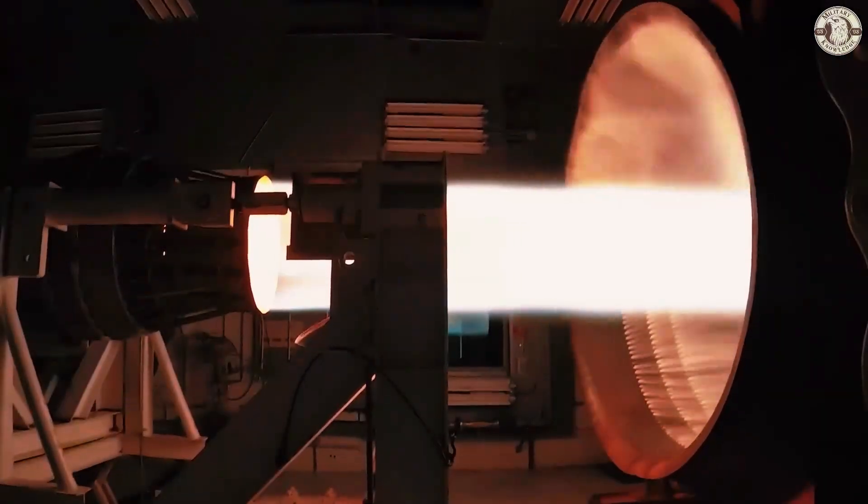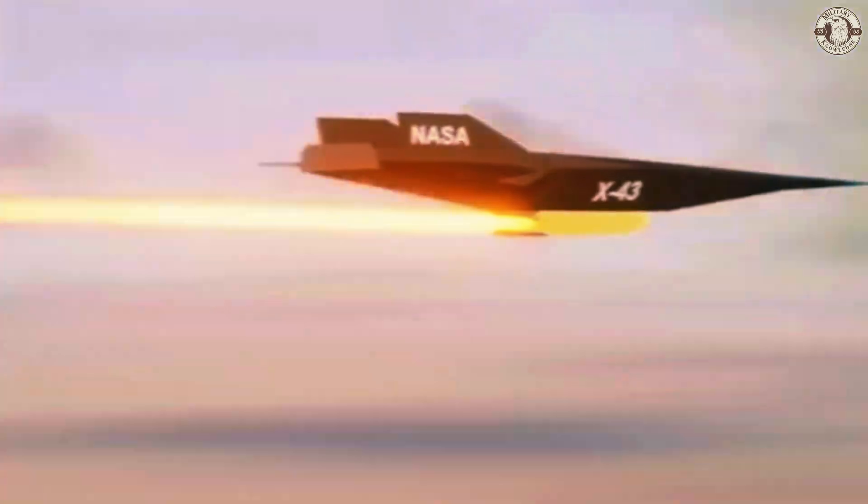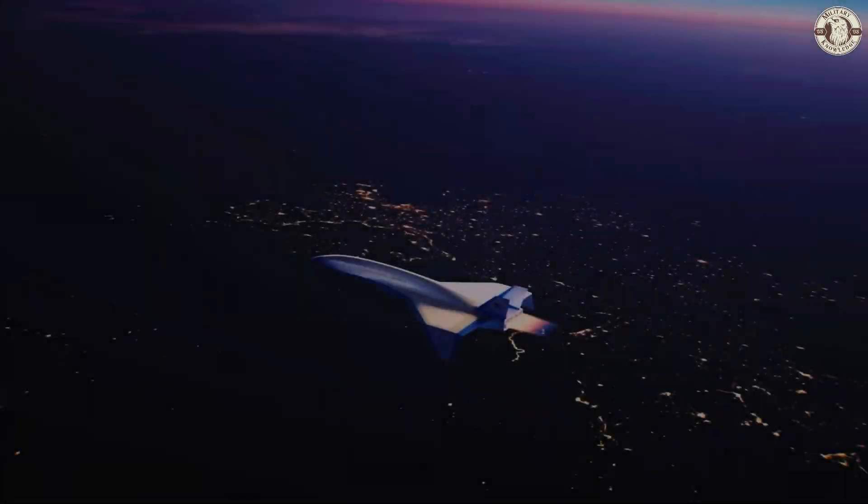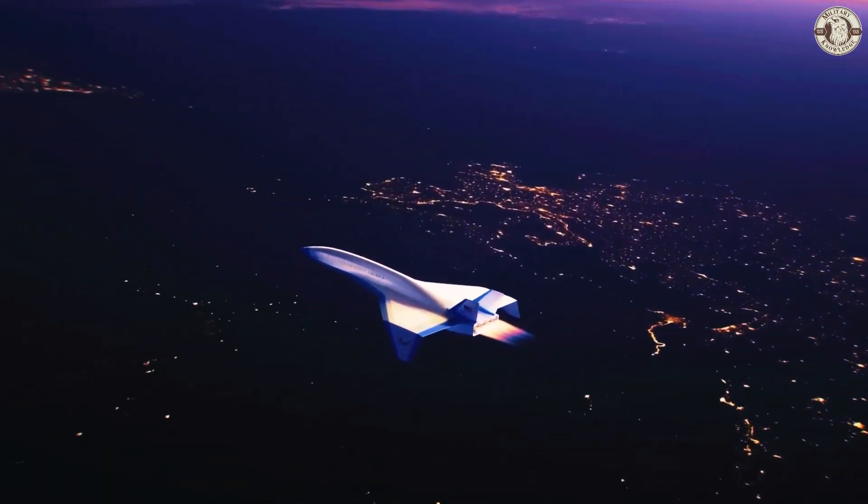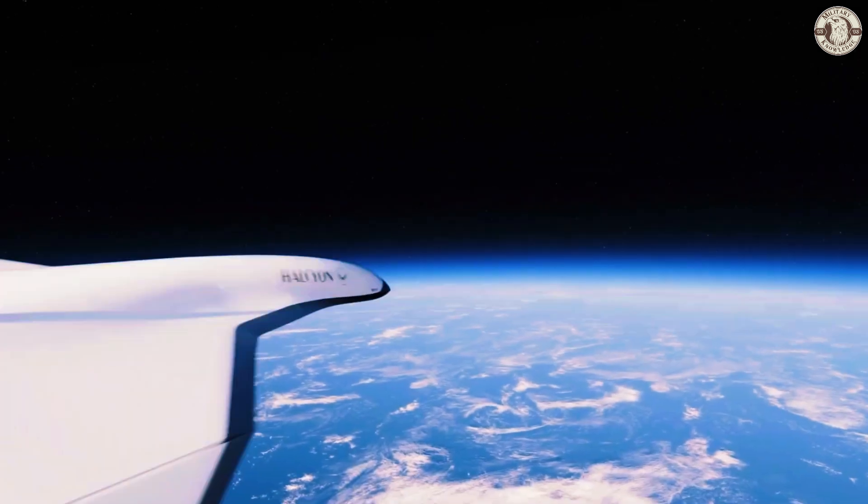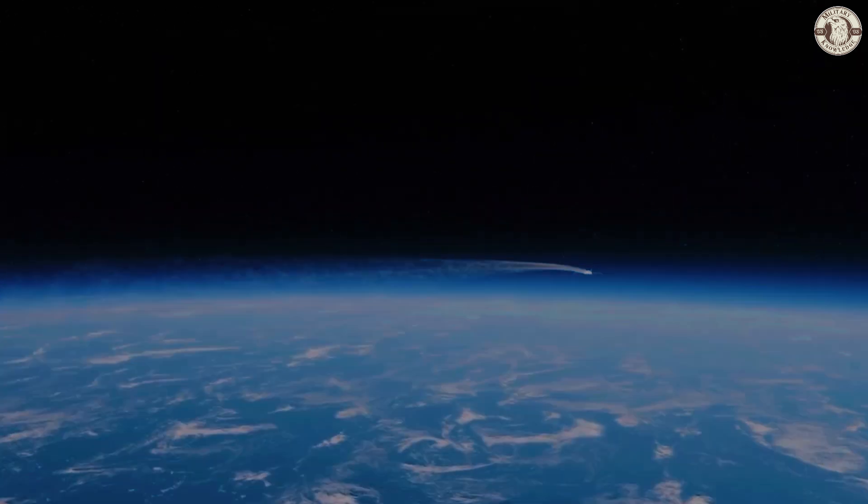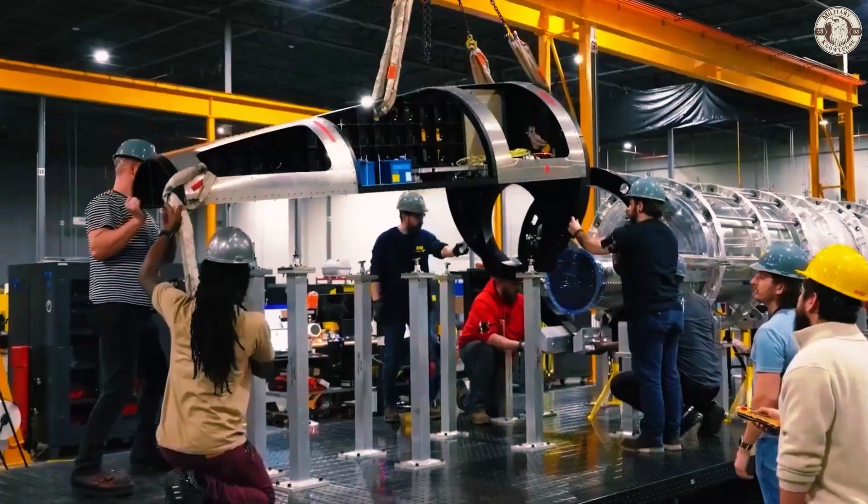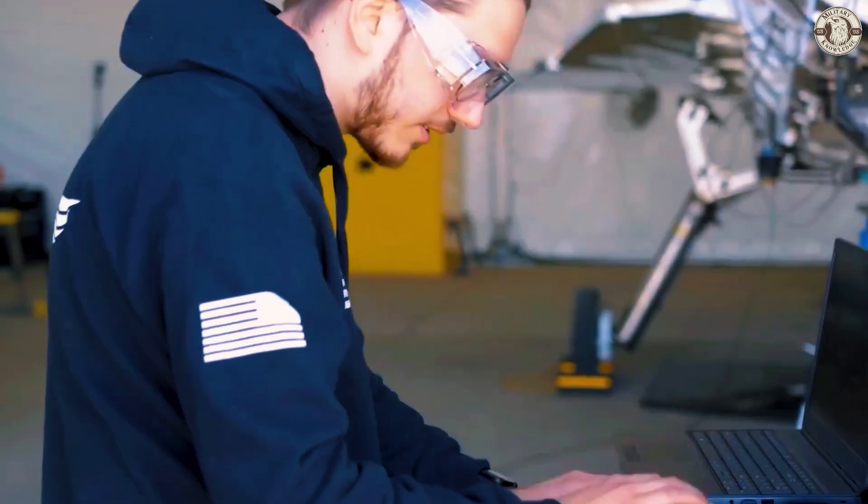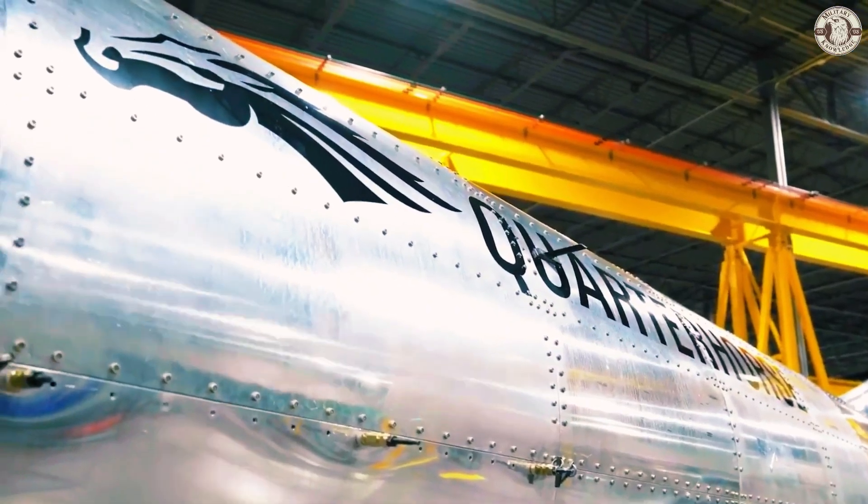And here's another fun fact: they didn't build this thing from scratch. Hermus used off-the-shelf components, including the General Electric J85 turbojet, which has been around for ages. Talk about a Frankenstein's monster of engineering—it's part classic, part futuristic, and all genius.